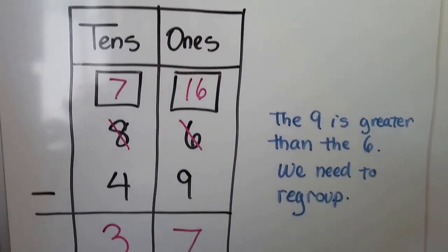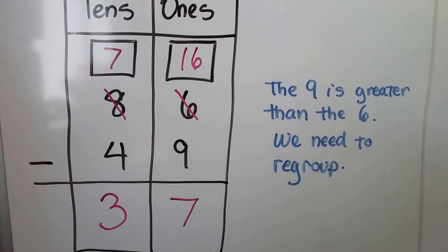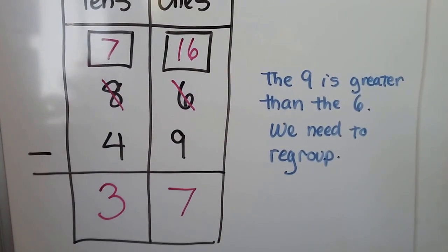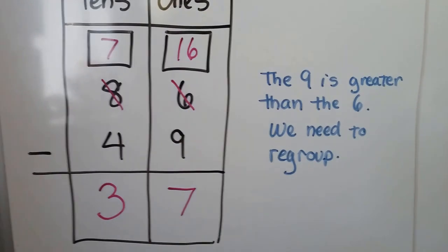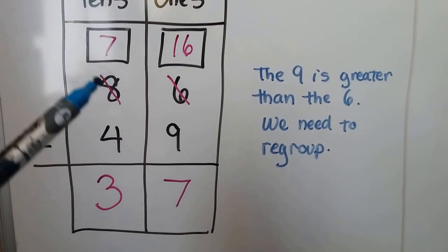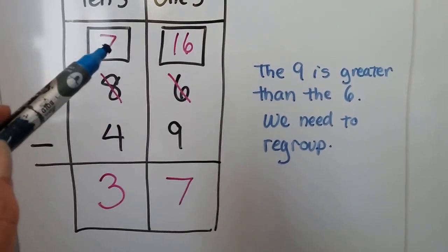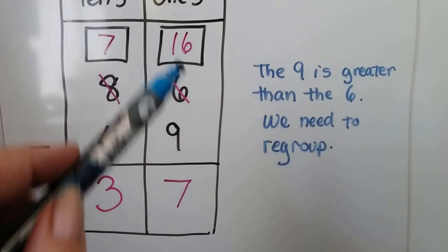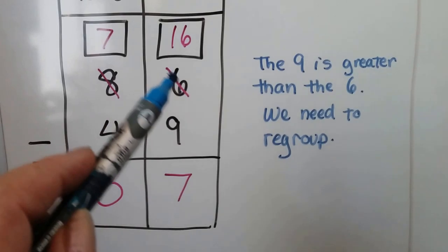We have 86 minus 49. We can see that the 9 is greater than the 6, so we need to regroup. We cross off the 8. It becomes a 7. We give the 10 to the ones place. It becomes a 16. We cross off the 6.